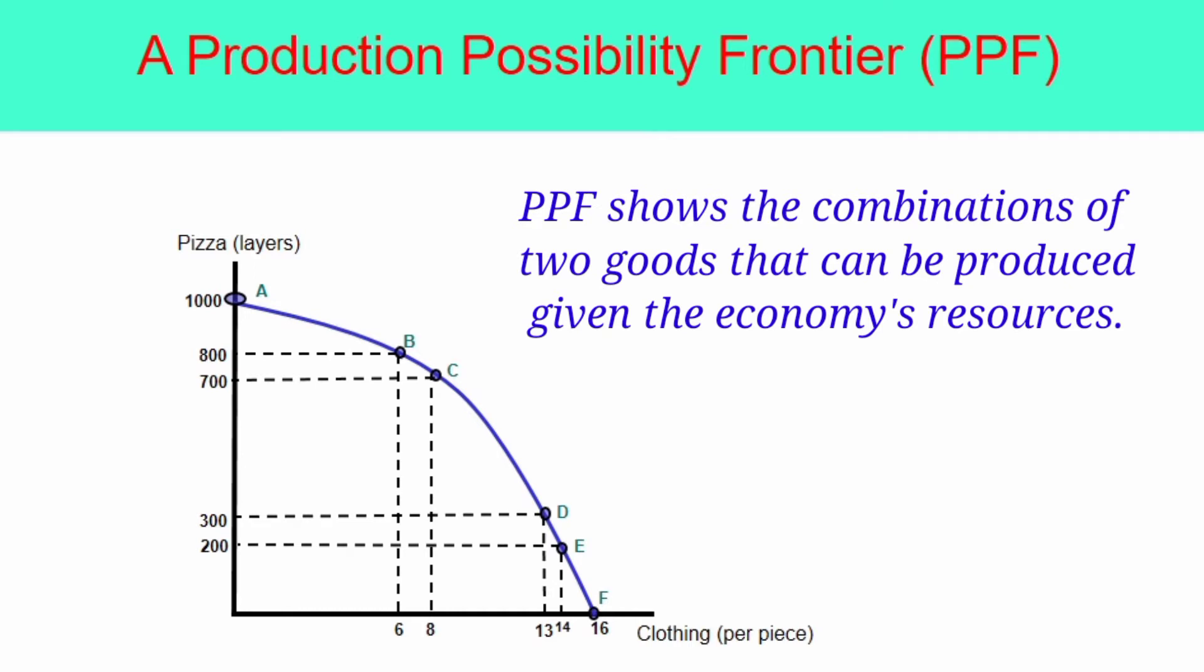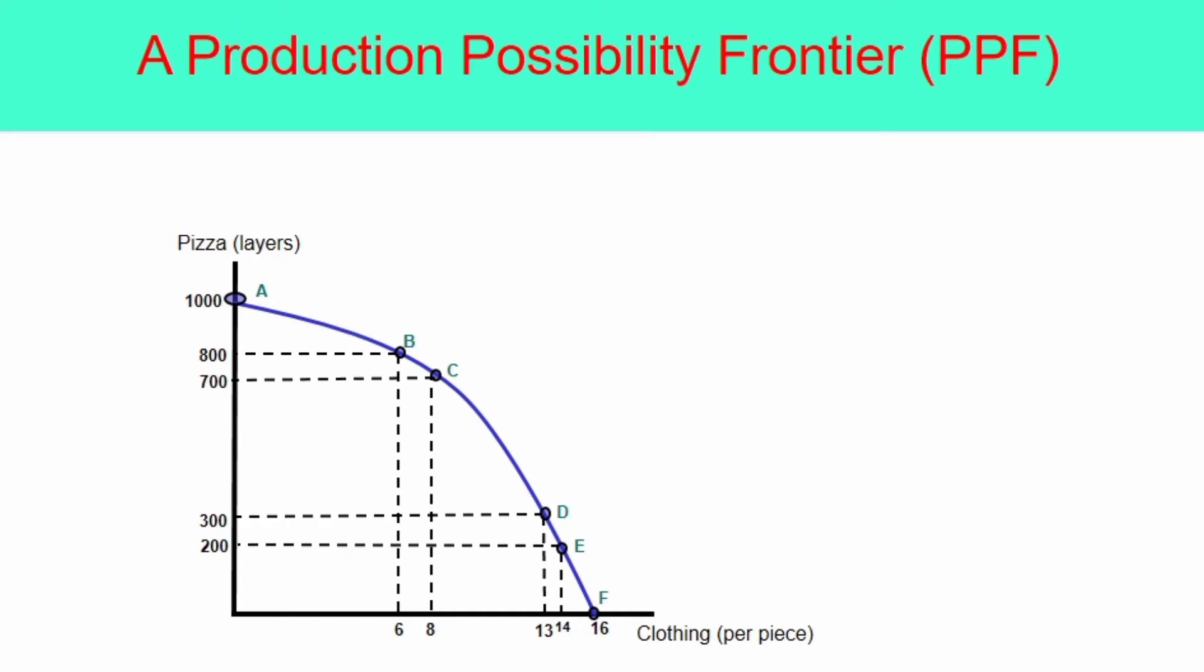The PPF shows the combinations or possibilities of two outputs that can be produced with an economist's resources. Note that any combination of pizza and clothing outside the frontier is impossible to produce, let's say at point G. And point G here represents scarcity.